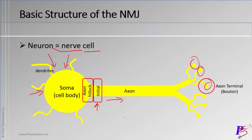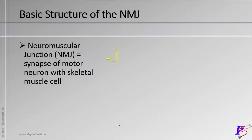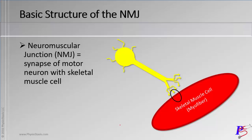So axon terminal or bouton. A junction — you can also say synapse — is pretty much a joining, where things come together. Down at the bottom, we have the synapse, or the junction of the neuron and the skeletal muscle cell.